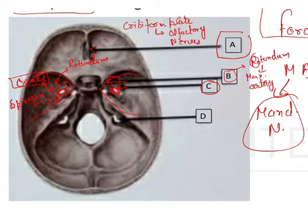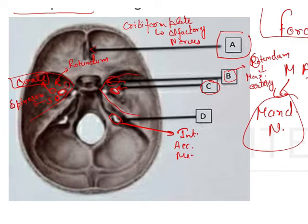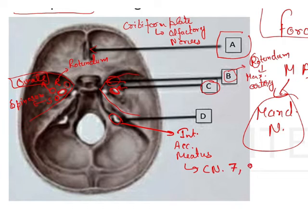The fourth structure, marked by D, is going to be the internal acoustic meatus, located in the posterior cranial fossa. This internal acoustic meatus generally gives passage to cranial nerves 7 and 8 — that is the facial nerve and your auditory nerve.